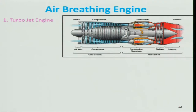The work extracted from the hot, high-pressure gas by the turbine is meant entirely to run the compressor. So the turbine's function is just to supply power to the compressor. All the thrust of the turbo-jet engine is harnessed by further expanding the gas in the exhaust nozzle.